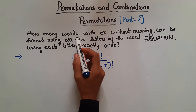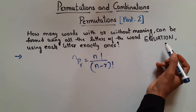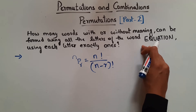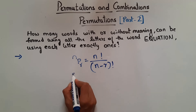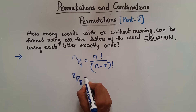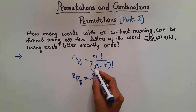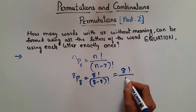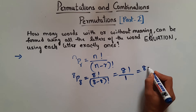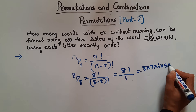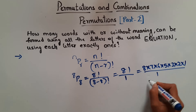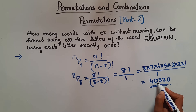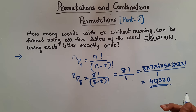So here in this question, we have to find how many words with or without meaning can be formed using all the letters of the word EQUATION. So how many letters are there in the word EQUATION? 1, 2, 3, 4, 5, 6, 7, 8. So out of 8 letters, we have to choose all 8 of them. So 8P8, which is equal to 8 factorial divided by 8 minus 8 factorial. 8 minus 8 is 0, and 0 factorial is 1. So 8 factorial is 8×7×6×5×4×3×2×1, which gives you 40,320. So you can make 40,320 words out of the word EQUATION.